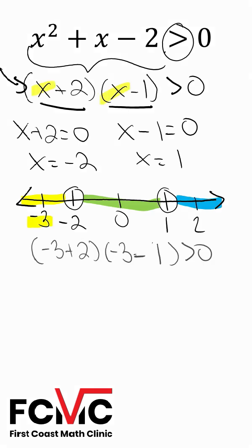So if we start with negative 3, we're going to get negative 3 plus 2 times negative 3 minus 1 is greater than 0. When we simplify this, we're going to get a true statement. So I'm going to write true above this interval.